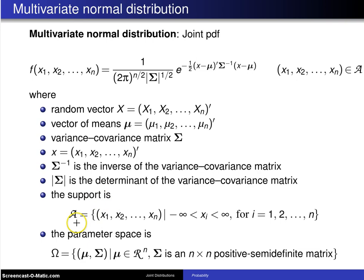The support is basically Rn and the parameter space is Ω and this is the set of all μ and Σ. Those are the parameters such that μ is an element of Rn and Σ is an n by n positive semidefinite matrix.